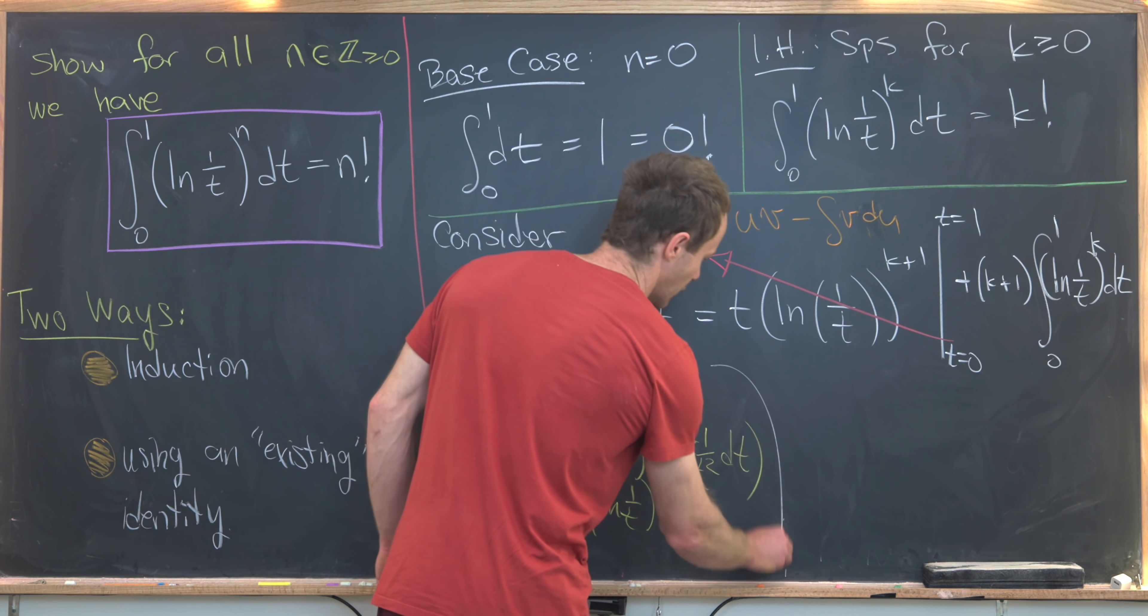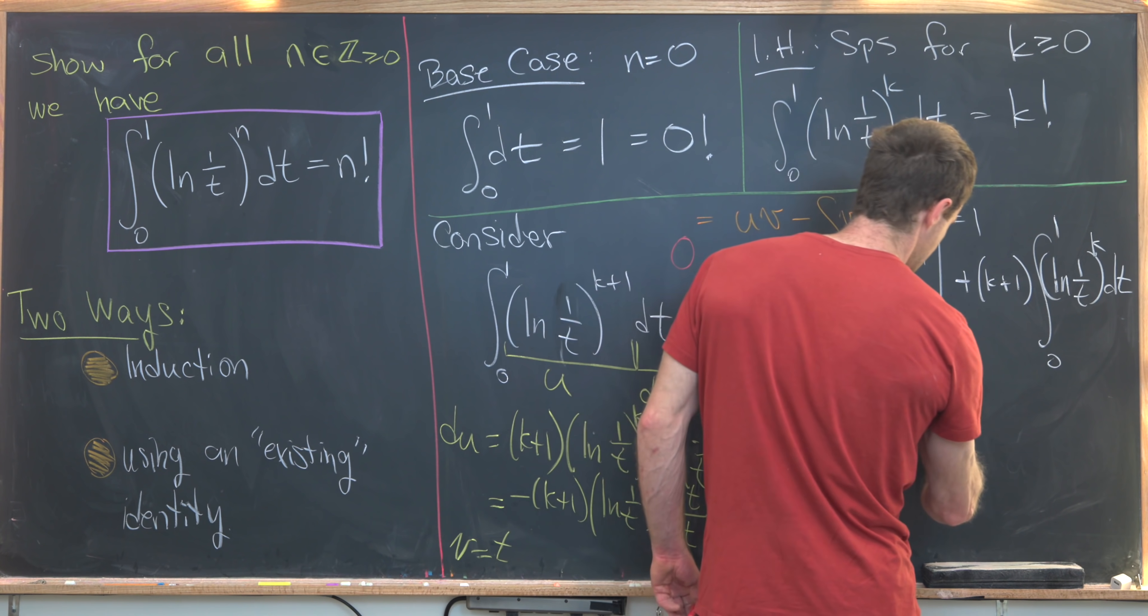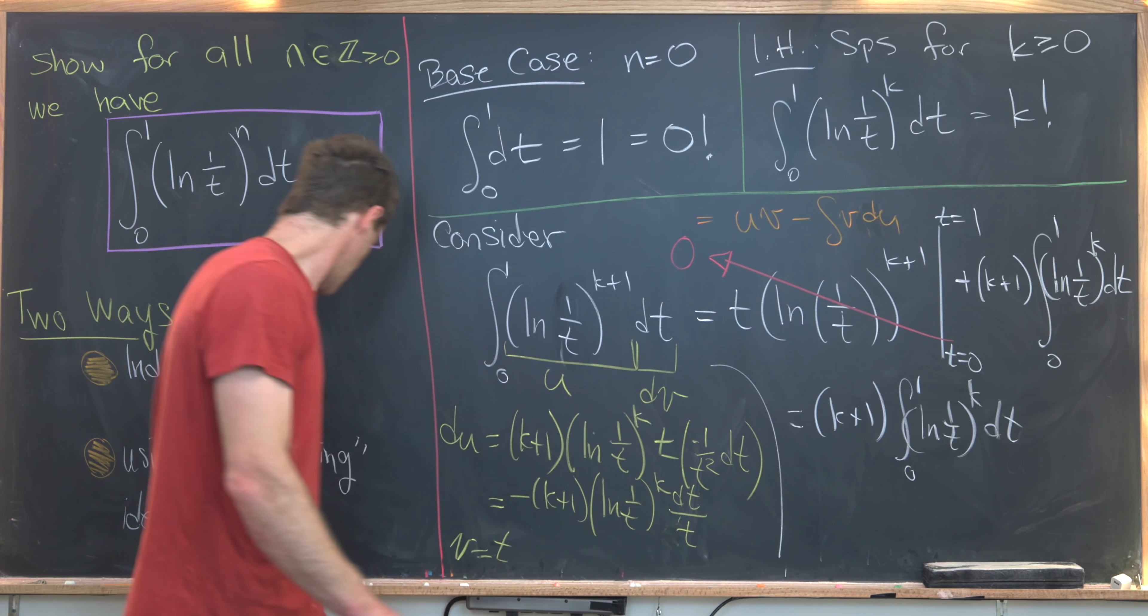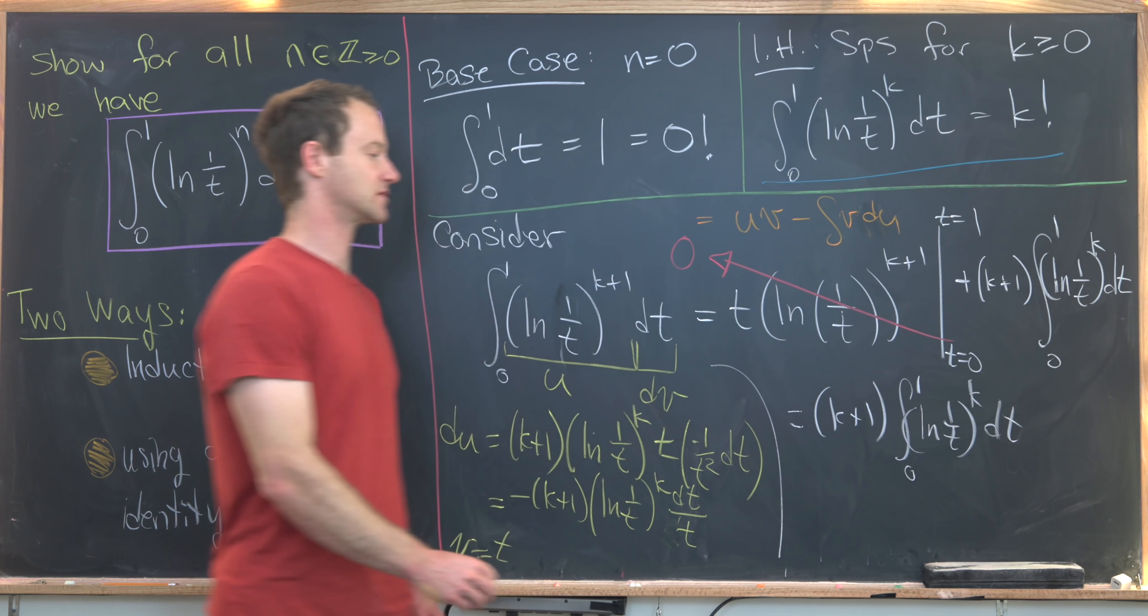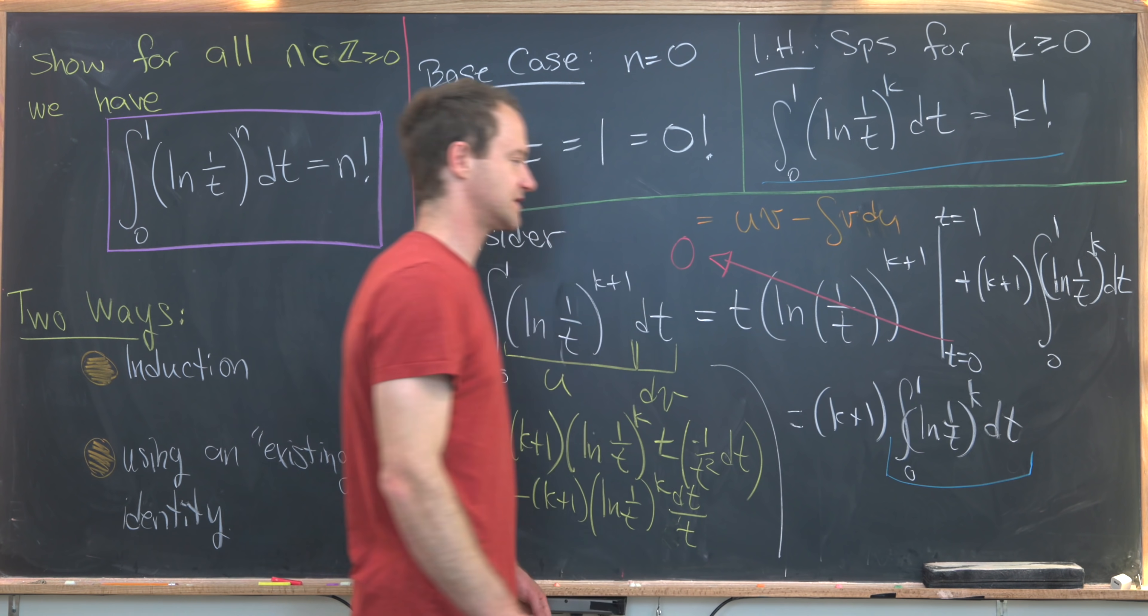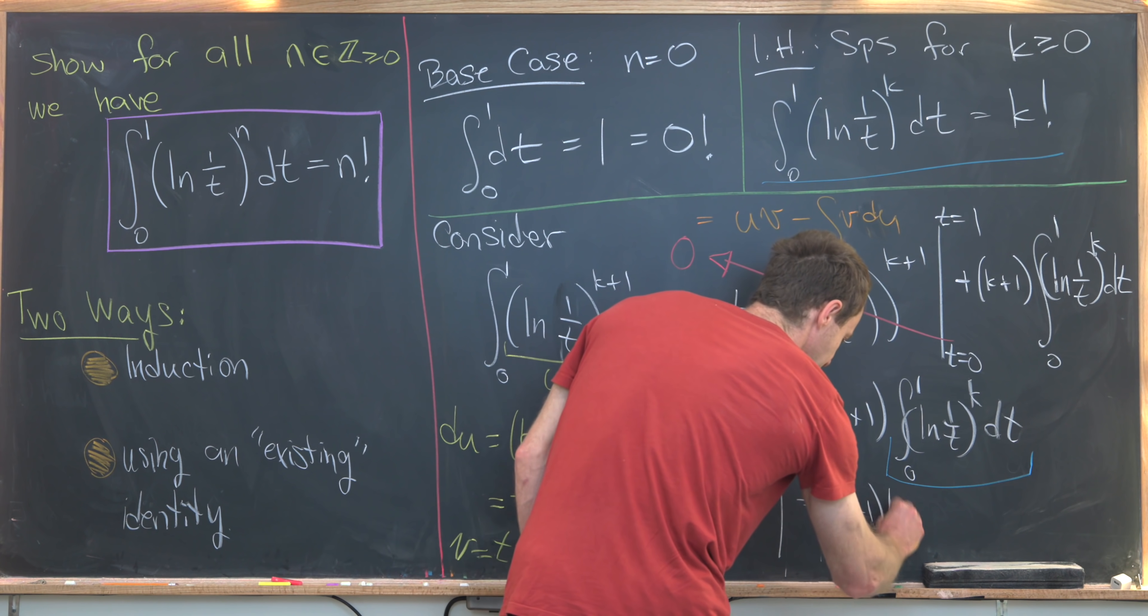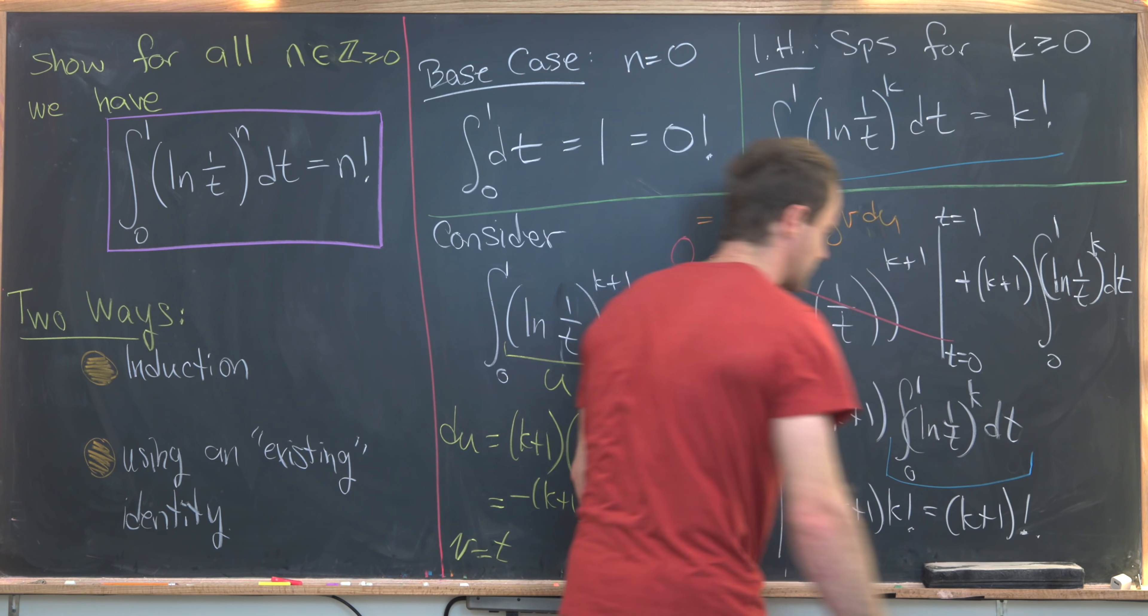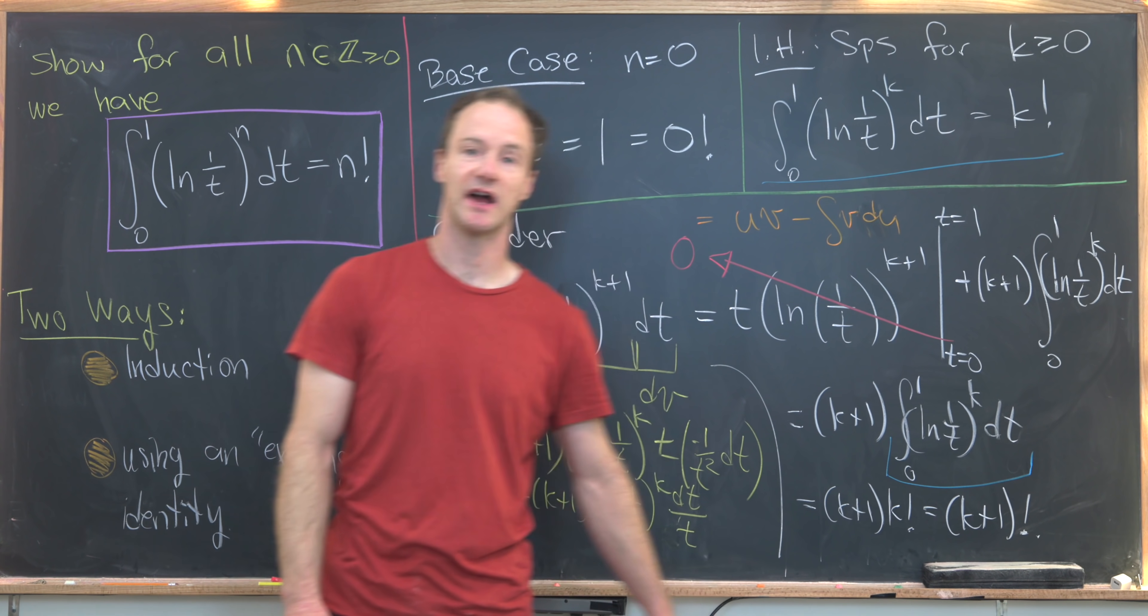So let's bring down what we have. We have k plus 1 times the integral from 0 to 1 of natural log of 1 over t to the k dt. But check it out. We've got our induction hypothesis that says that that integral is equal to k factorial, but that's exactly the integral that we have left ourselves with here. So now we have this is equal to k plus 1 times k factorial, but that's very clearly k plus 1 factorial. And so that finishes the proof of this identity using our induction strategy.